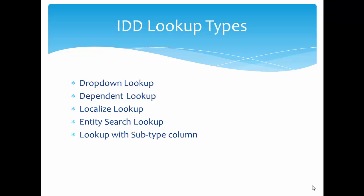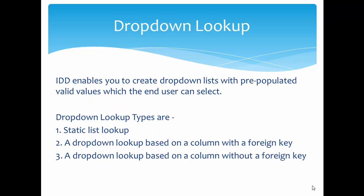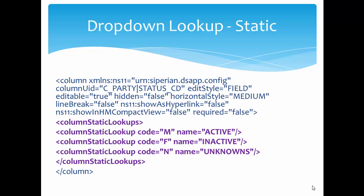In today's session we will focus on dropdown lookup; the remaining lookup types will be covered in upcoming sessions. The dropdown lookup enables you to create a dropdown list with pre-populated valid values which the end user can select. It is further divided into subtypes: static list lookup, dropdown lookup based on a column with a foreign key, or dropdown lookup based on a column without a foreign key.